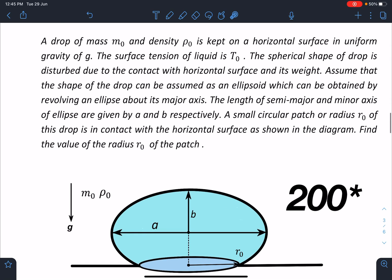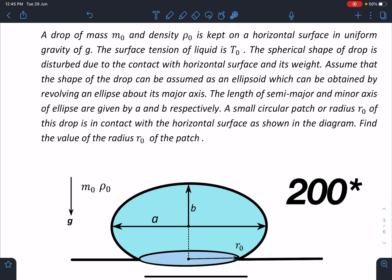Here is the statement of this problem. A drop of mass m₀ and density ρ₀ is kept on a horizontal surface in uniform gravity g. The surface tension of liquid is T₀. The spherical shape of drop is disturbed due to contact with the horizontal surface and its weight. Assume the shape can be treated as an ellipsoid obtained by revolving an ellipse about its major axis. The semi-major and minor axes are given by a and b respectively.